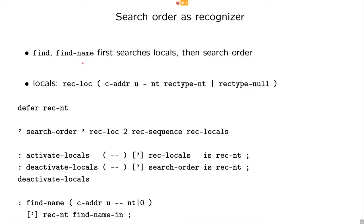So, one other point is how to deal with locals. So, basically, the position I take here is that find and find-name has to first search locals and then the search order. And, of course, only if locals are active. So, here we assume we have a local recognizer that has the typical NT type thing.